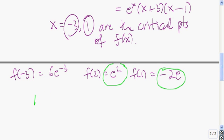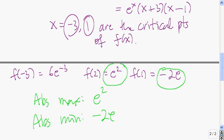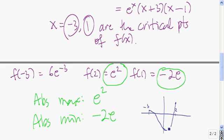So the absolute max is e squared, and the absolute min is negative 2e. Here's a rough sketch of what the function looks like on the interval. Here you can see the absolute minimum value, which happens at x equals 1, and here you can see the absolute maximum value.